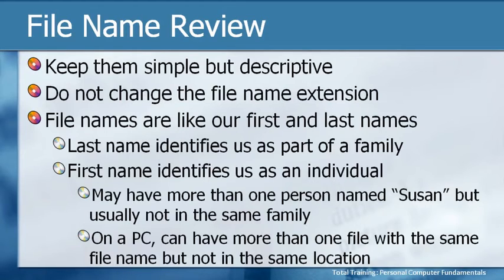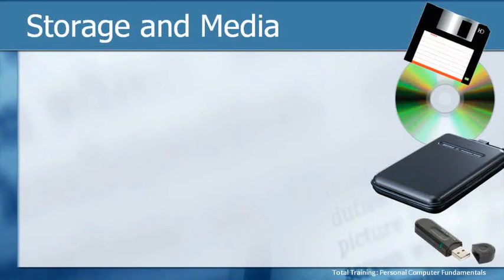On a PC you can have more than one file with the same file name, but not the same first and last name in the same location. If it has the same first name but a different last name — a different extension — both can reside in the same location. It's the whole name being the same that can't be stored in the same location. When saving a file, it must be stored on some type of hardware, so let's talk about storage and media.